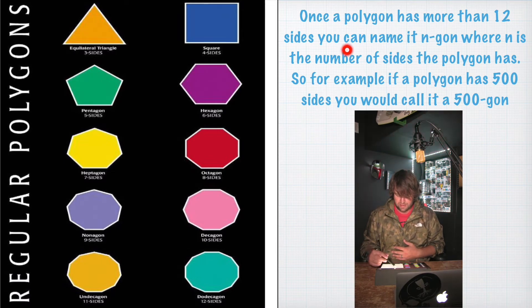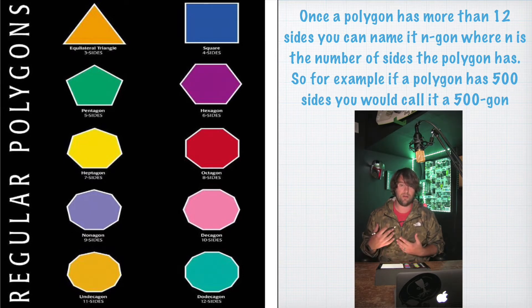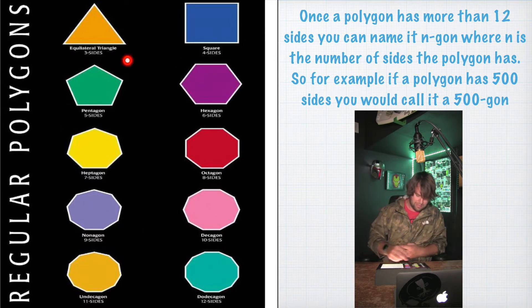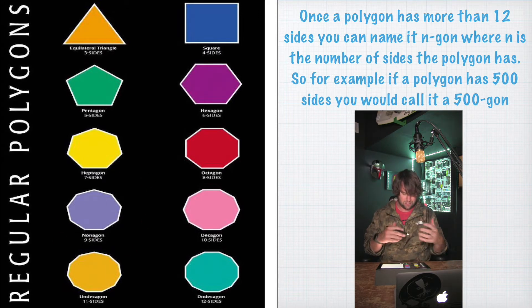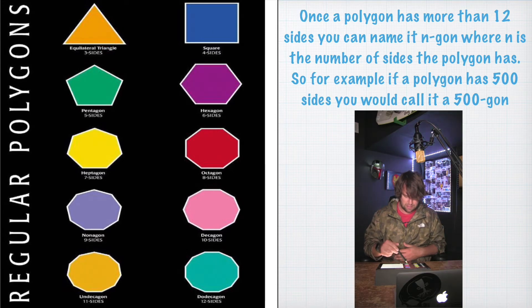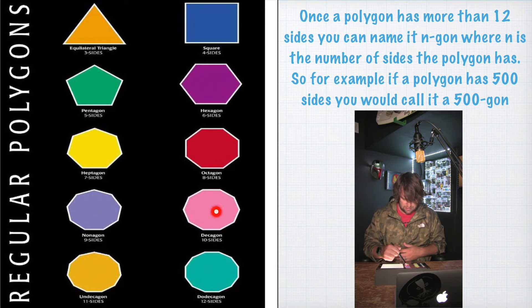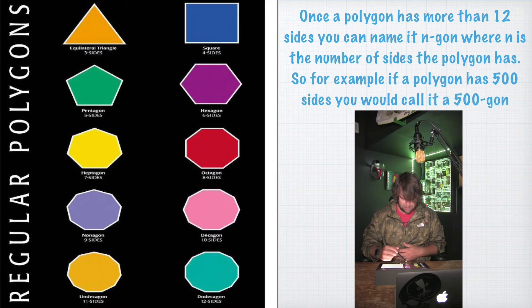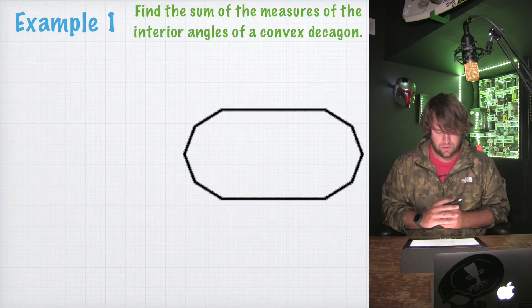Once a polygon has more than 12 sides, you can name it an n-gon, where n is the number of sides. For example, if a polygon has 500 sides, you'd just call it a 500-gon. Here's a list of all the common shapes: triangle, square, pentagon, hexagon, heptagon (7 sides), octagon (8 sides), nonagon (9 sides), decagon (10 sides), undecagon (11 sides), and dodecagon (12 sides).